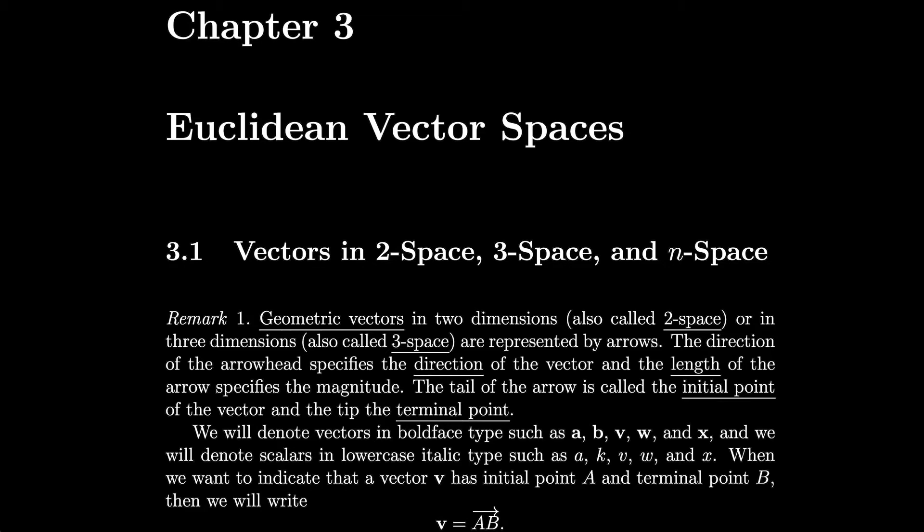Geometric vectors in two dimensions, also called 2-space, or in three dimensions, also called 3-space, are represented by arrows. The direction of the arrowhead specifies the direction of the vector, and the length of the arrow specifies the magnitude.